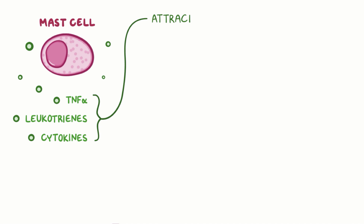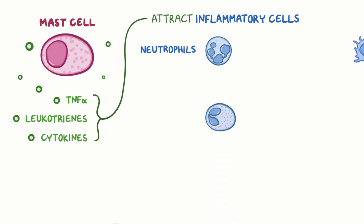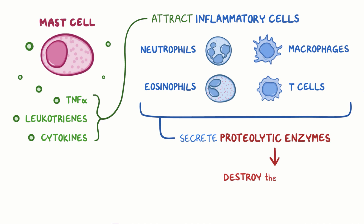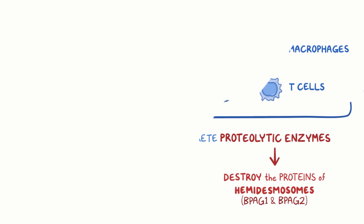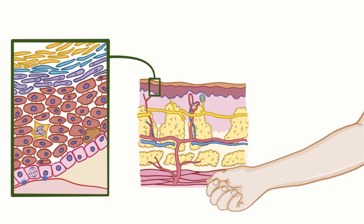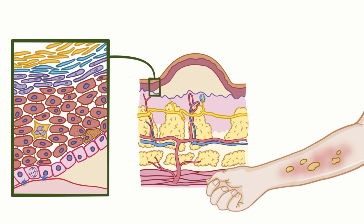These molecules attract inflammatory cells like neutrophils, eosinophils, macrophages, and T cells. These inflammatory cells then secrete proteolytic enzymes, which destroy the proteins of hemidesmosomes — BPAG1 and BPAG2. So when the hemidesmosomes are destroyed, the basal cells separate from the basement membrane, and a split forms between the dermis and epidermis, resulting in what's called a subepidermal bullae.